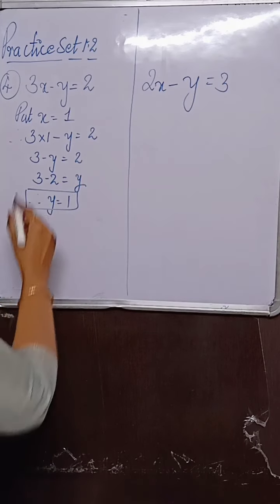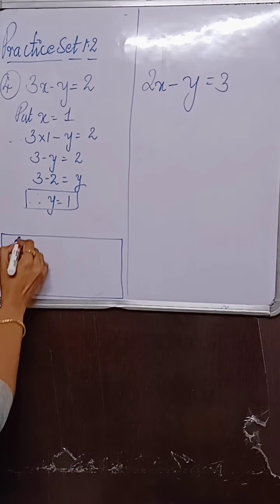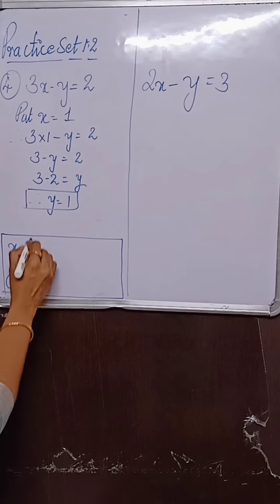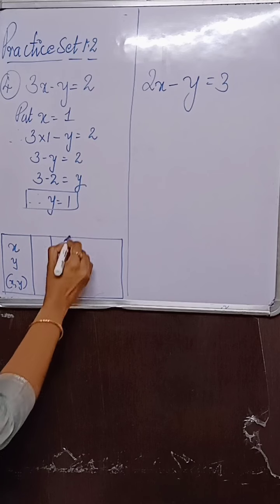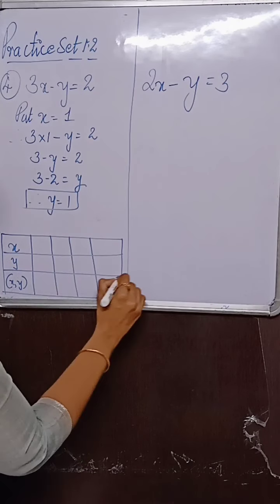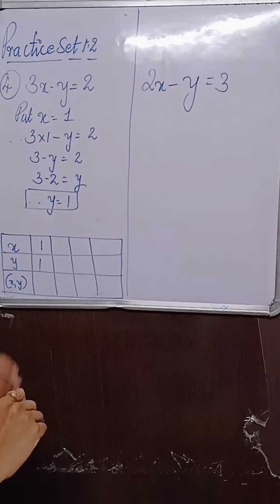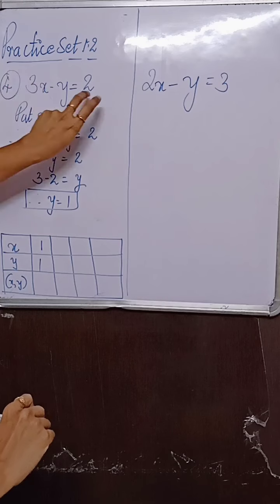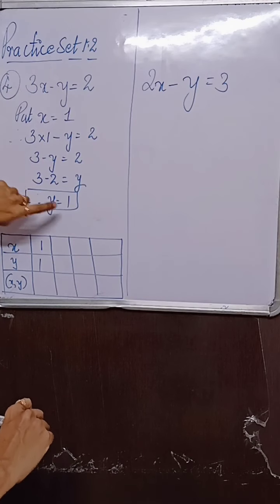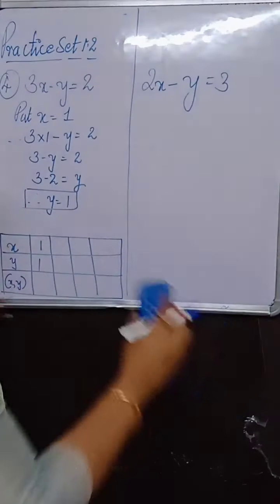I will draw the table with columns x and y for both equations. We need four ordered pairs. When x is 1, y we got is 1. Let me cross-check: 3 times 1 minus 1 equals 3 minus 1 equals 2. Correct. Cross-checking also done to be on the safer side.